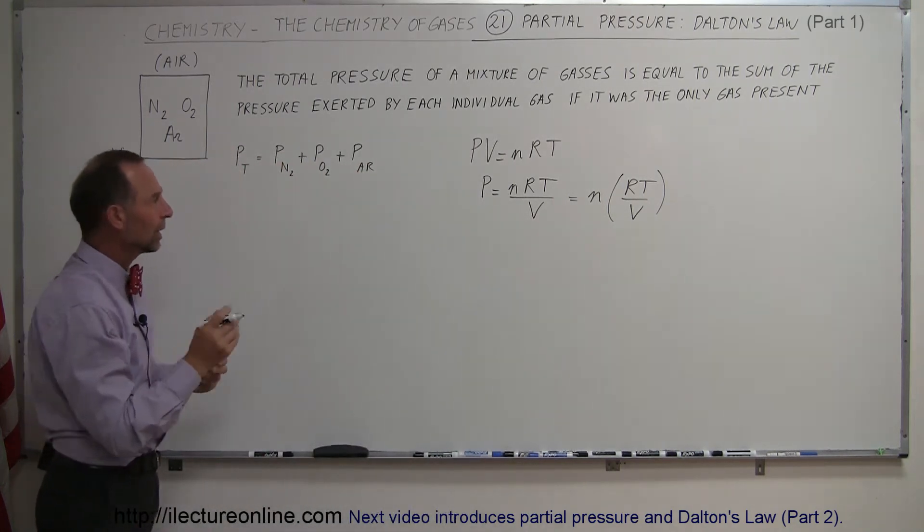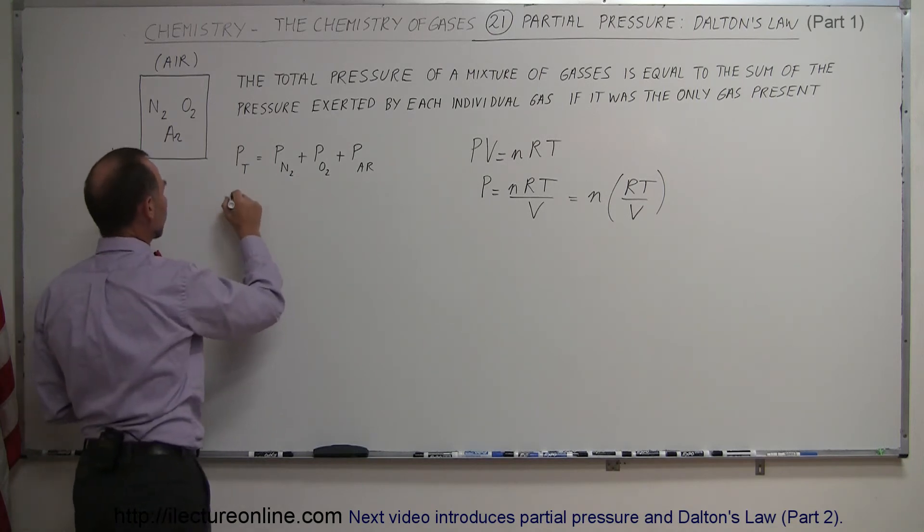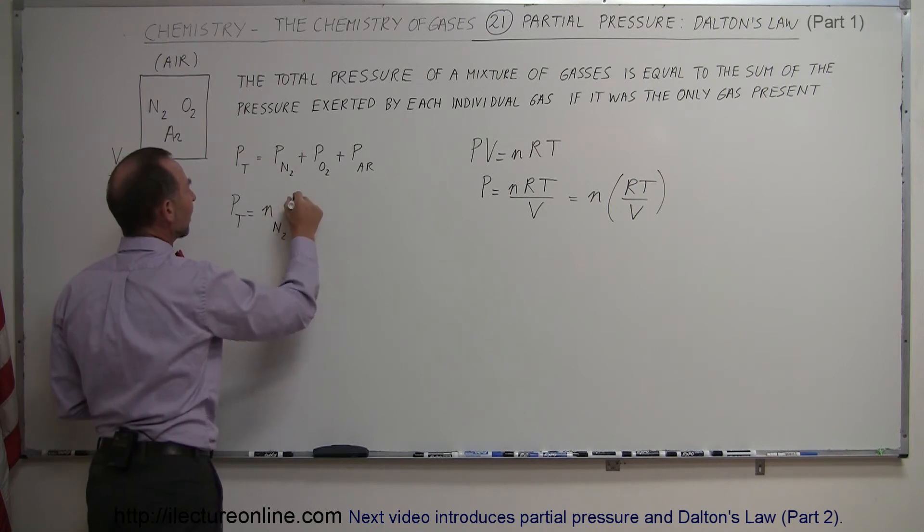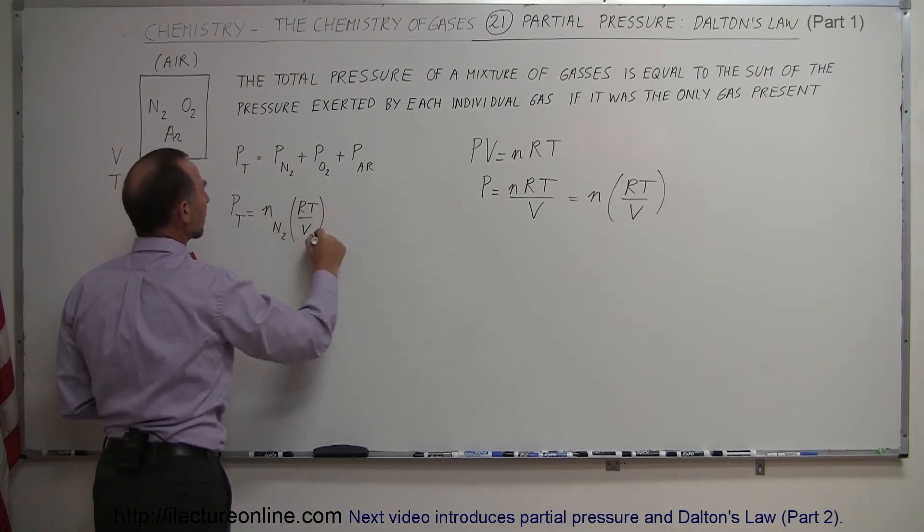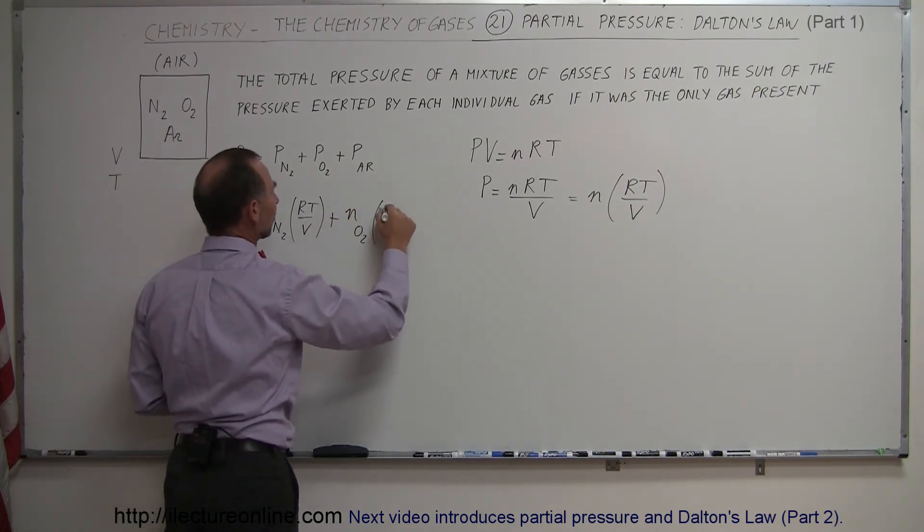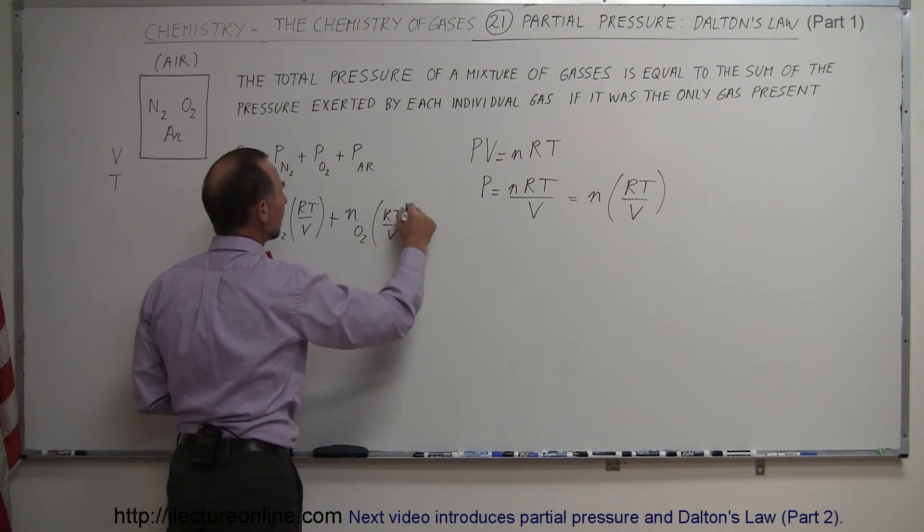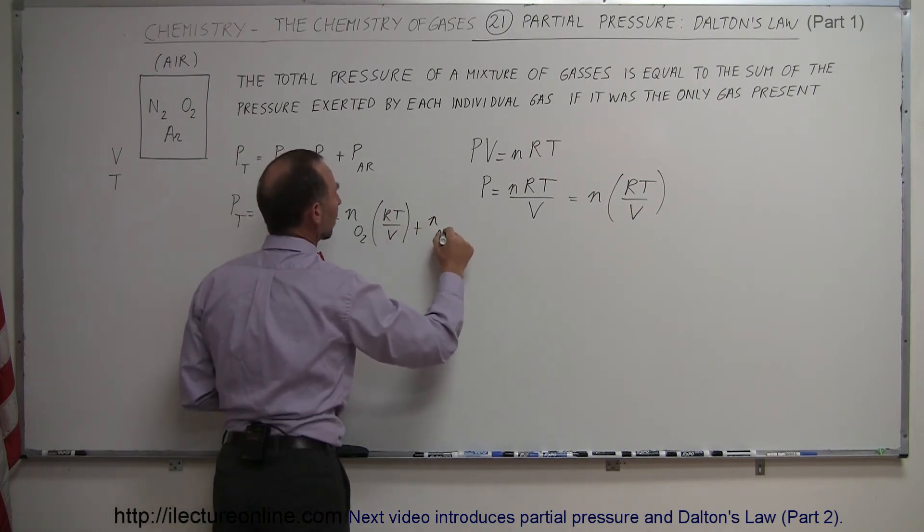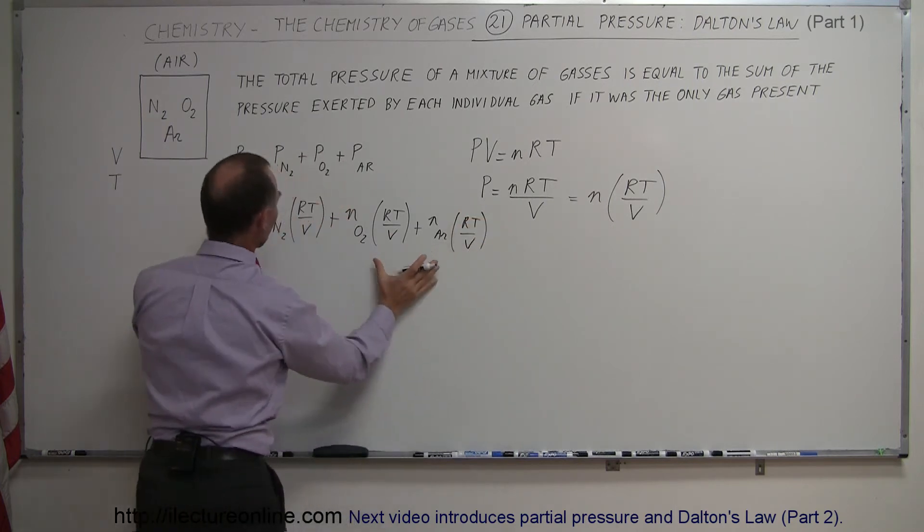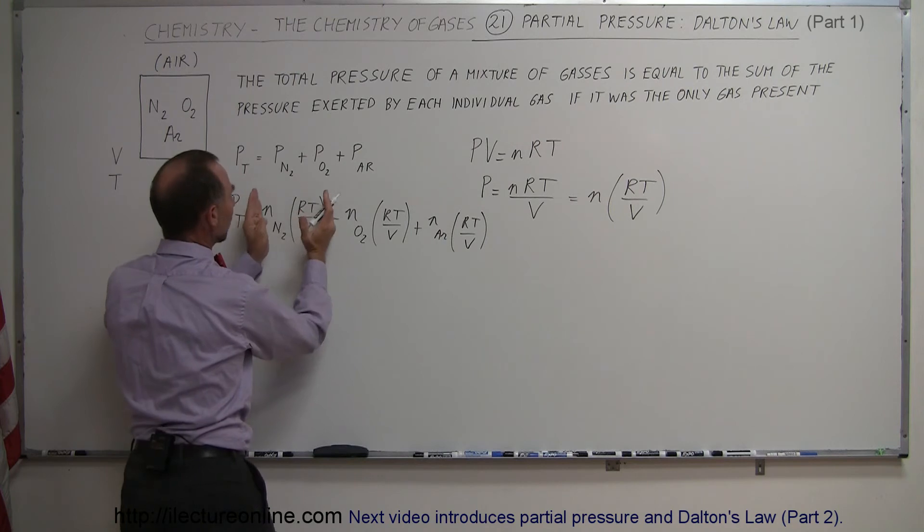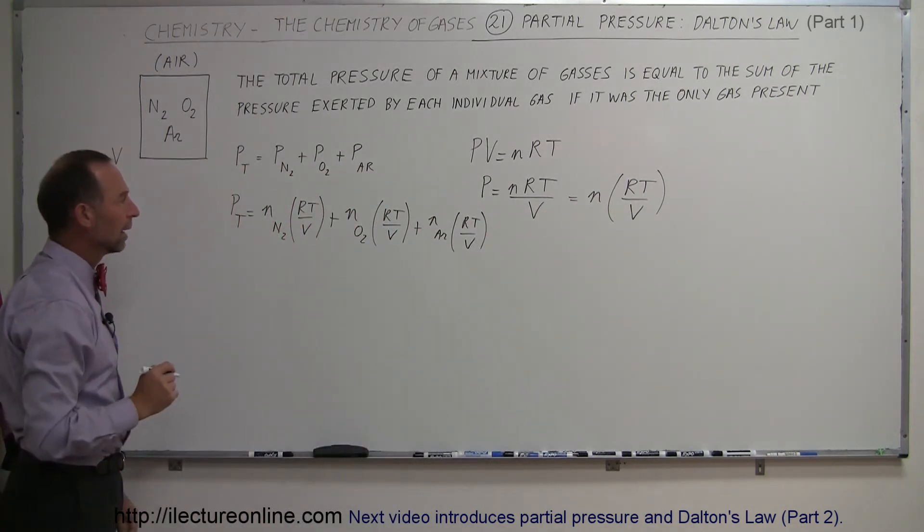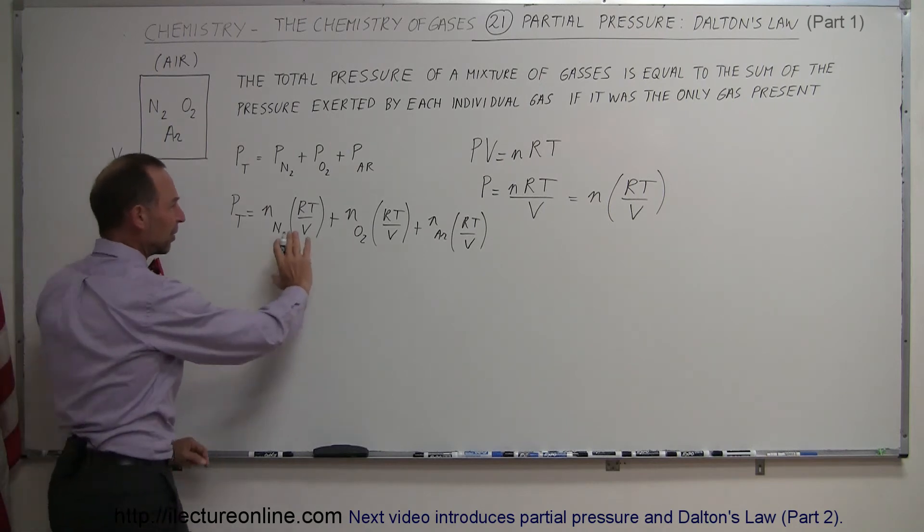So if we consider that, we can then say that the total pressure in the gas is equal to the number of moles we have of nitrogen times RT over V, plus the number of moles of oxygen we have times RT over V, plus the number of moles of argon gas we have times RT over V. So this is the very same equation, instead of writing pressure for each gas, we simply write the equivalent using the PV equals NRT equation.